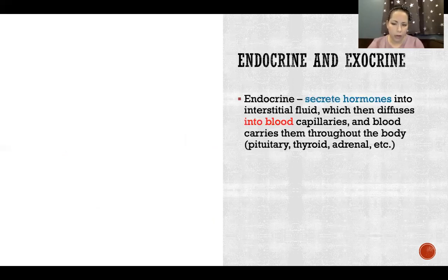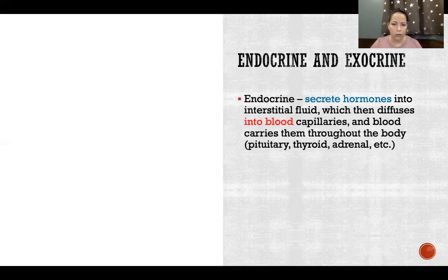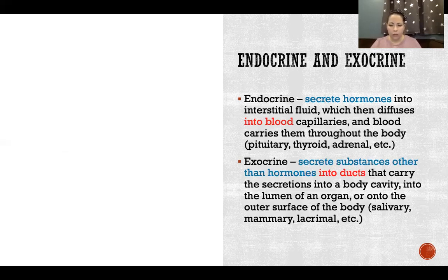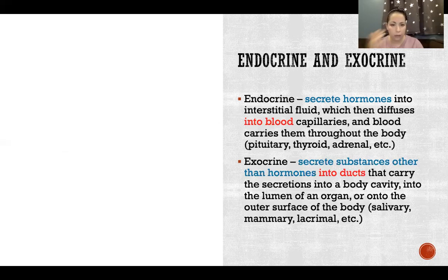Endocrine glands secrete hormones into the interstitial fluid, which then diffuse into blood capillaries and are carried throughout the body — examples include the pituitary gland, the thyroid, and the adrenals. Exocrine glands, in contrast, secrete anything but hormones. They secrete into ducts — hollow tubes — that carry secretions into a body cavity, into the lumen of an organ, or onto the surface of the body. Examples include salivary glands, mammary glands, and lacrimal glands for tear production.